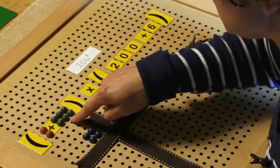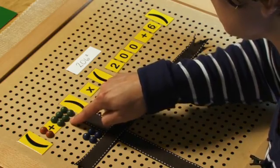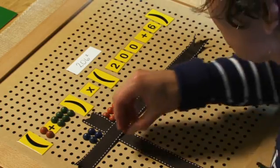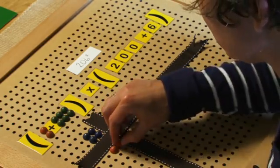So we can go up to the units now. 6 units times 200 is 1,200, represented by 12 red pegs.